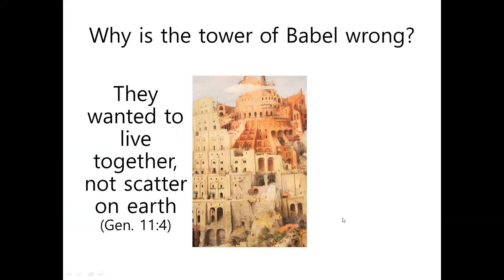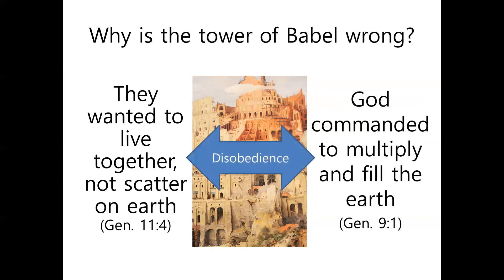So we may ask: why is the Tower of Babel wrong? What's wrong with that? Because they wanted to live together, not scattered on earth. We have to remember Genesis chapter 9 verse 1 — God commanded them to multiply and fill the earth. God didn't command them to gather together and live in the same place. God never commanded them to build a high tower to reach the heaven. So their attempt to build the Tower of Babel was disobedience.